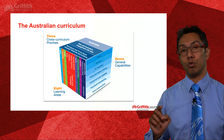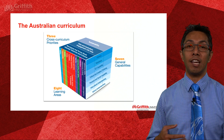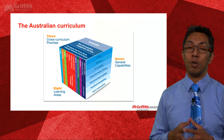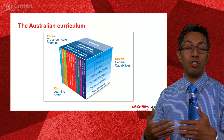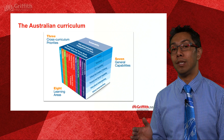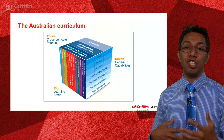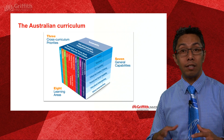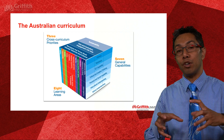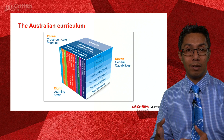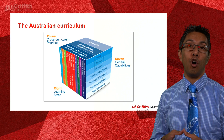The first of those other elements is the cross-curriculum priorities. These are contexts that the Australian government has deemed to be super important, and we should be using these three contexts when teaching each of our learning areas from K through to Year 10. Those contexts are sustainability, Asia and Australia's engagement within Asia, and Aboriginal and Torres Strait Islander histories and cultures.